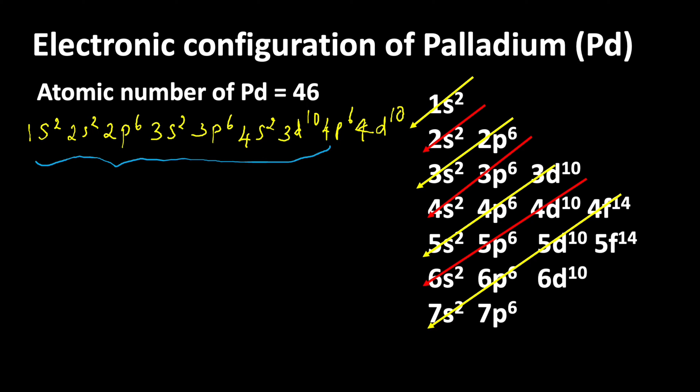So till 4p6 is Krypton. So we will write that Krypton in the square bracket, and that outer electron, that means 4d10, we are just writing outside the bracket. So this electronic configuration is the condensed electronic configuration of Palladium.